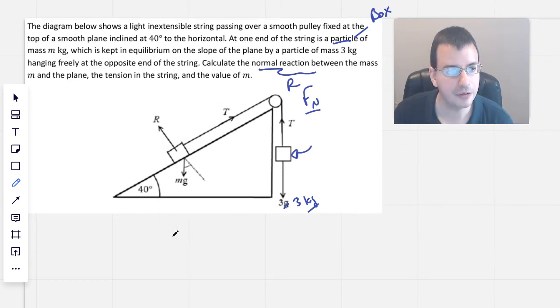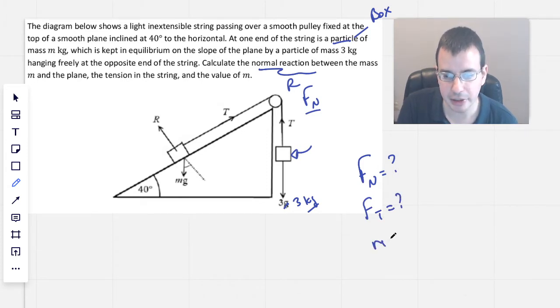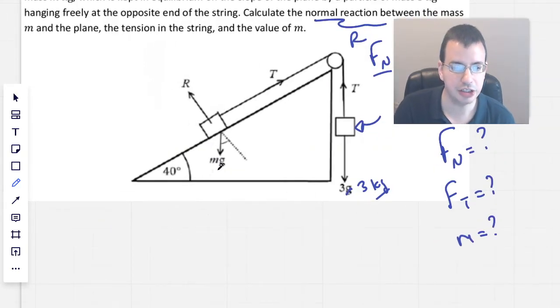So first thing, I'm going to do force normal equals question mark, force tension equals question mark, and m equals question mark. First thing we want to do is look at what we've got here, so this is mass times gravity, this is the force due to gravity. I'm going to draw it at the center of the block, like this, and that's just the way I prefer to draw it. Instead of labeling mg, I'm going to call it force gravity, same thing though.